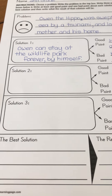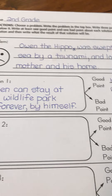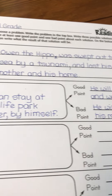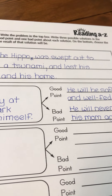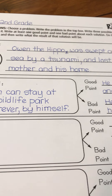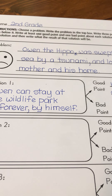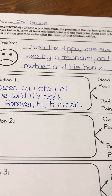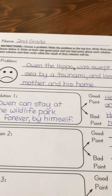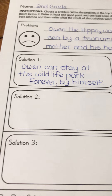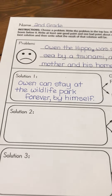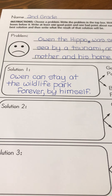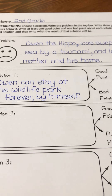In our story, the major problem was Owen the hippo was swept out to sea by a tsunami and lost his mother and his home. We know ultimately what Owen did at the wildlife park to solve his problem, but today I want you to think a little bit beyond the story. Knowing the problem that Owen has, I want you to try and come up with three possible solutions for Owen's problem.